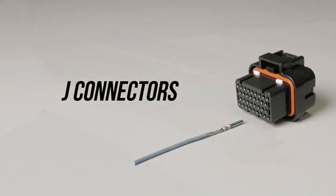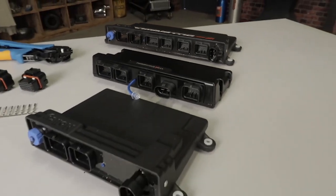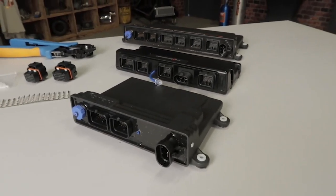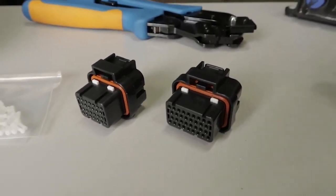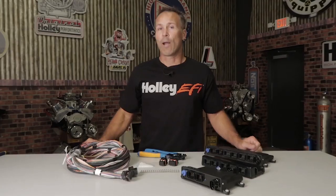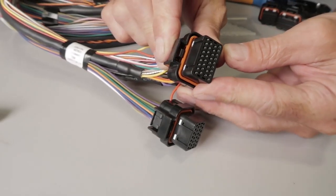Let's start with the Holley EFI J connectors. You'll find these connectors used on Holley Avenger, Terminator, HP, Dominator and our Terminator X ECUs. The technical name for the terminal design used in these connectors is the Tyco SuperSeal 1.0. I really like this design, mainly because releasing the terminals from the connector body is super simple.